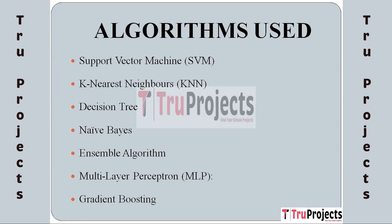The third algorithm is Decision Tree. Decision trees' hierarchical structure provides interpretability and decision paths for health condition prediction. It excels in capturing feature interactions and guiding informed clinical decisions based on patient attributes.